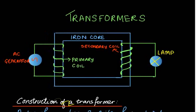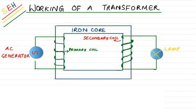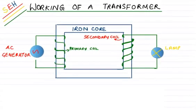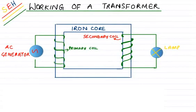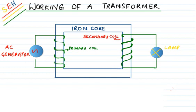After construction comes the working. So this is about the working of a transformer. Again, the same setup: there is a soft iron core with turns of the primary coil to its left and turns of the secondary coil to its right, with the output lamp and the AC generator as input. I'll explain the working of the transformer and also tell you how to write your answer for the examination.